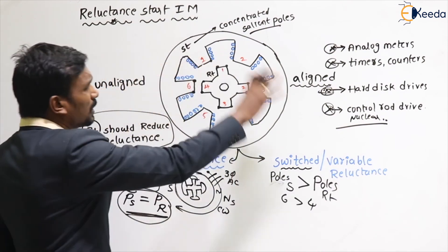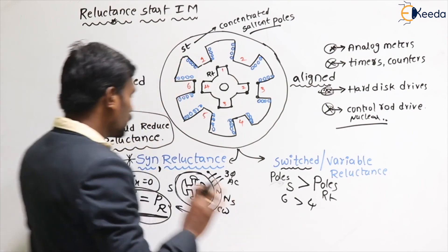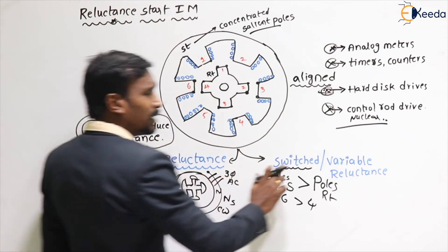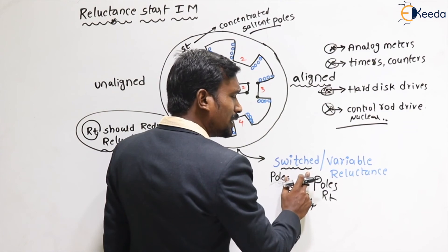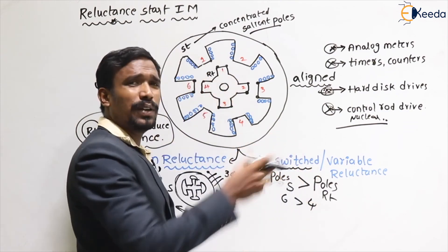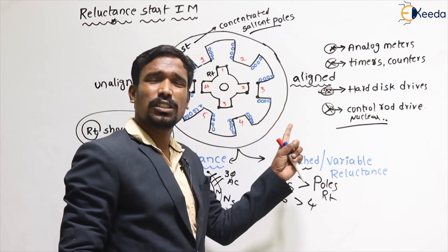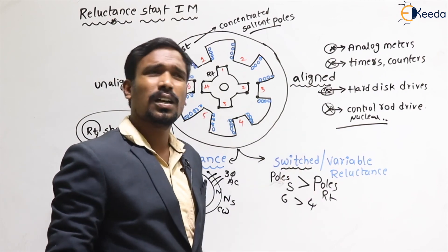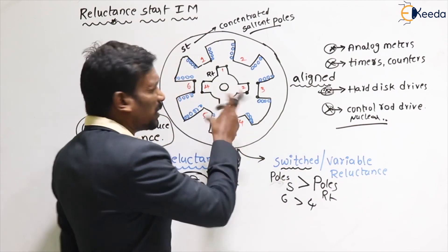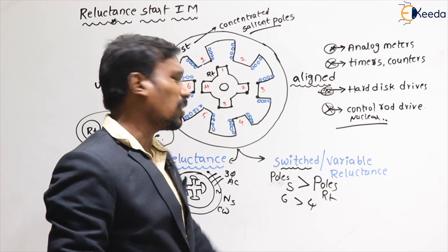Simply, this is about the reluctance motor. We have two types: synchronous reluctance and switched reluctance. This is also called a stepper motor or step motor machine.